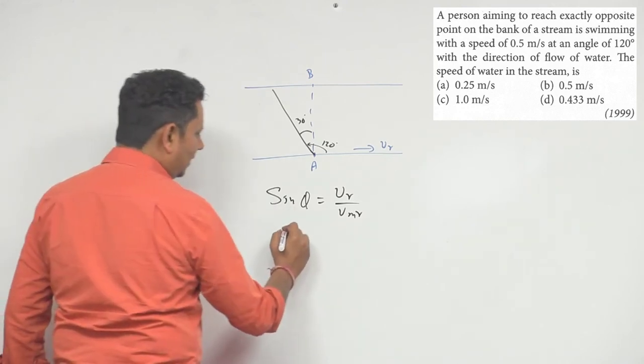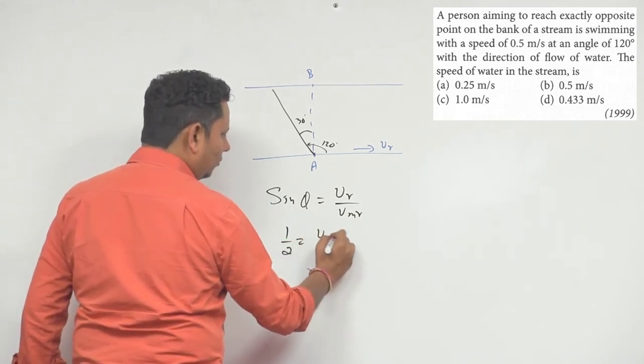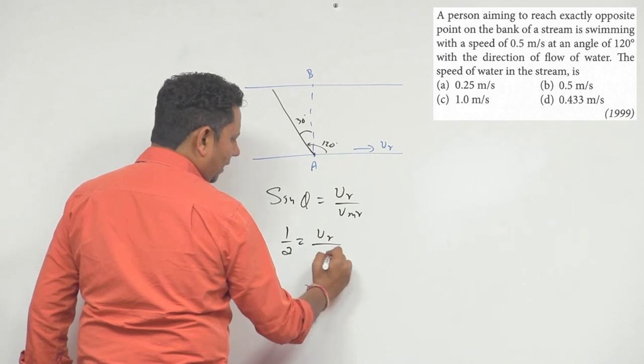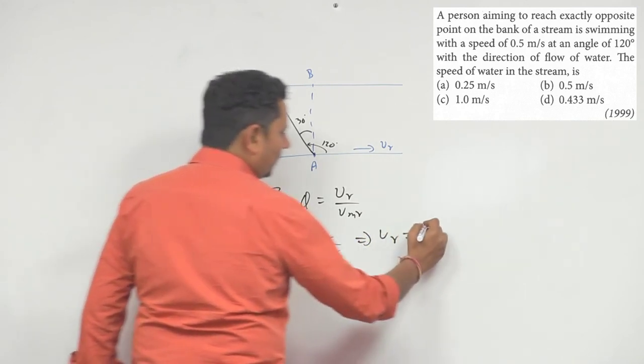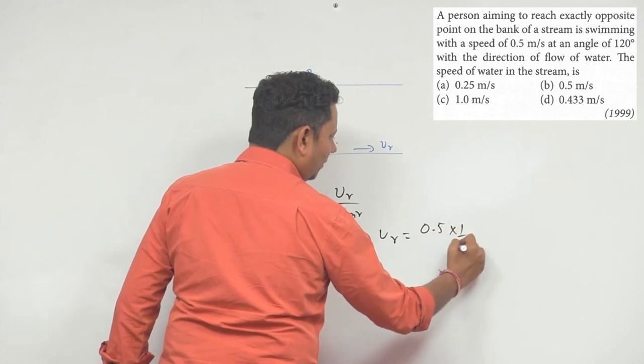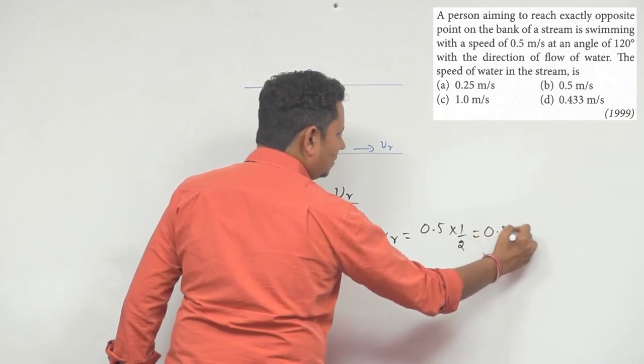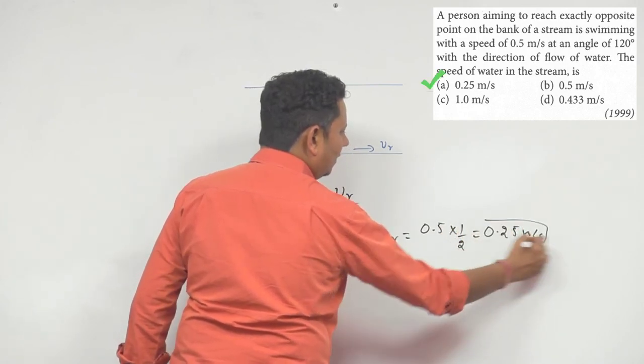So, which means sin 30 degrees, which will be 1 by 2, will be equal to VR divided by VMR, which implies VR will be equal to 0.5 multiplied by 1 by 2, which will be 0.25 meter per second.